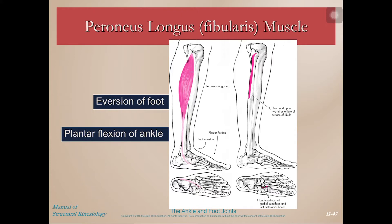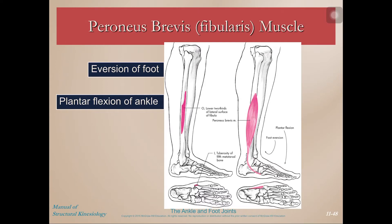Next are the muscles on the lateral aspect of the lower leg. The first is the peroneus longus — sometimes called fibularis because they come off the fibula. The peroneus longus does eversion of the foot, which makes sense given its lateral position, and the tendon runs behind the lateral malleolus, using it as a pulley. It also does plantar flexion of the ankle due to its anchor point on the medial cuneiform and first metatarsal. Peroneus brevis has the same actions — it's just a shorter muscle — also using the lateral malleolus as a pulley and inserting on the base of the fifth metatarsal, a very common fracture site.